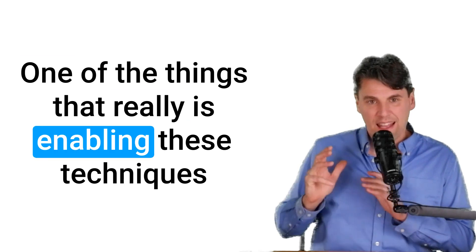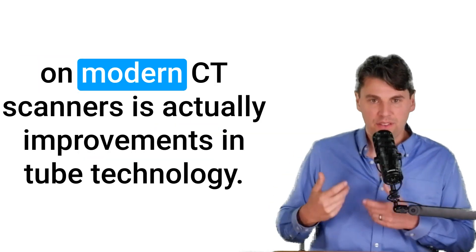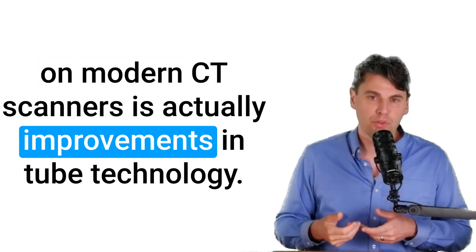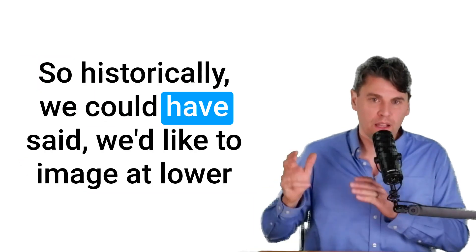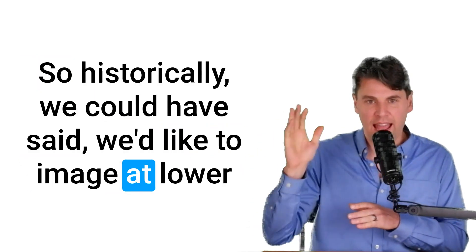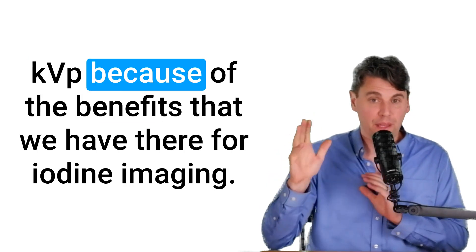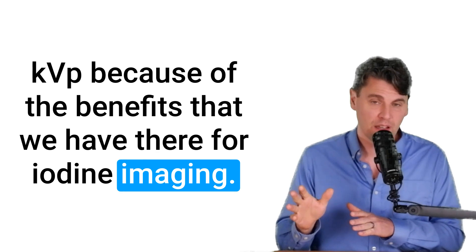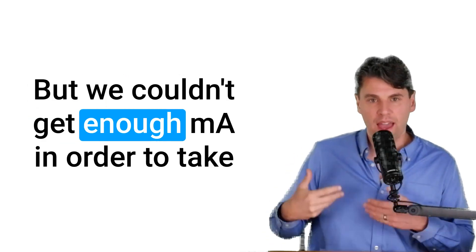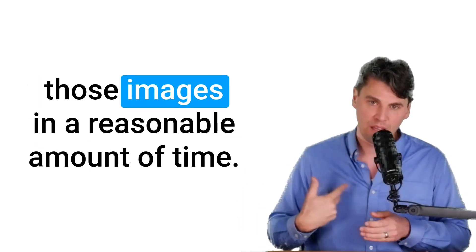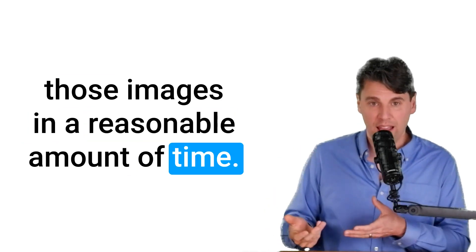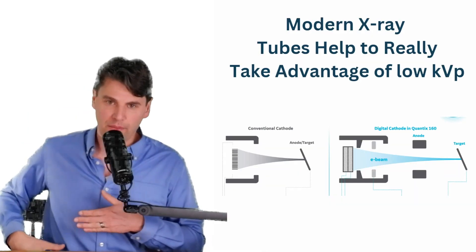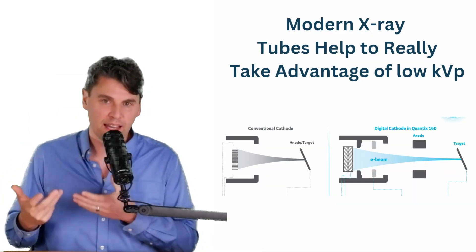So historically, we could have said we'd like to image at lower KVP because of the benefits that we have there for iodine imaging, but we couldn't get enough MA in order to take those images in a reasonable amount of time. The scans would have been very slow if we wanted to get enough MA.